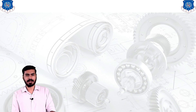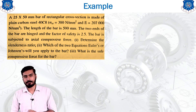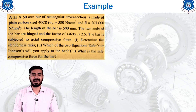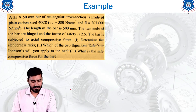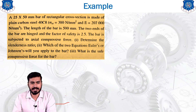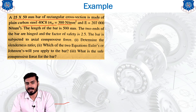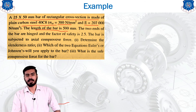Now we will see another example in which we will have to decide whether Johnson's formula or Euler's formula is applicable — this is going to be a very interesting example. The given data indicates that a 25 mm × 50 mm bar of rectangular cross section is made of plain carbon steel 40C8, and the sigma_yt and E values are provided. The length of the bar is 500 mm and both ends are hinged with a factor of safety of 2.5.